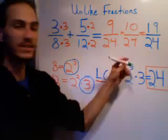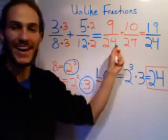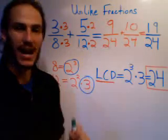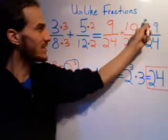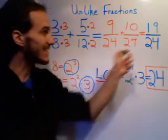And of course, as I already mentioned, you want to keep that same exact denominator. Do not add or change those denominators once you've got them to be common. So we get an answer here of 19/24.